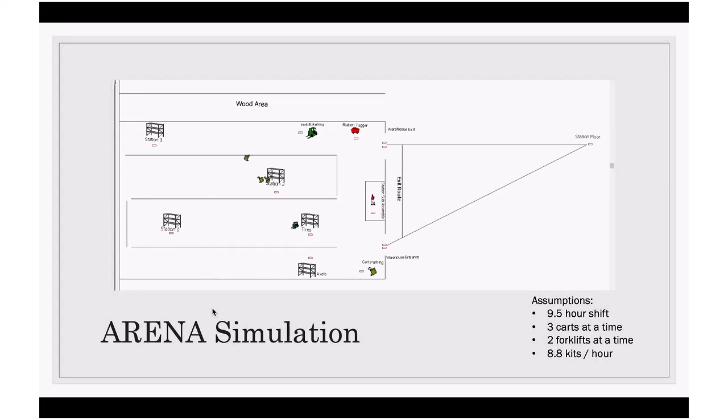If you could play the animation, some of the assumptions we have: shift lengths are 9.5 hours. We will only have three carts going inside the warehouse at a time due to the number of employees we will have, two forklifts at a time due to the number of forklifts we will have, and we will be making 8.8 kits an hour. You can see how things flow. You can also notice this is not a bidirectional flow, and the exit and entrance are specified, unlike our real layout, but that's due to the complication of the system and the simulation.